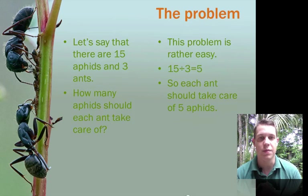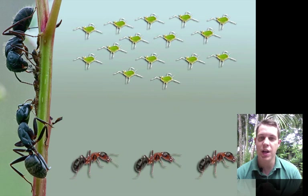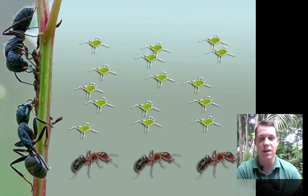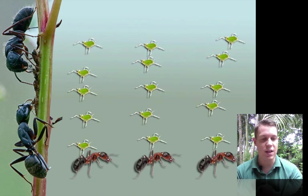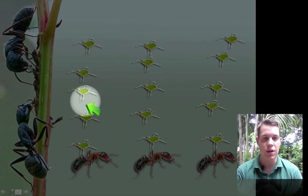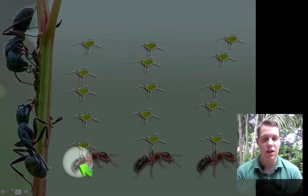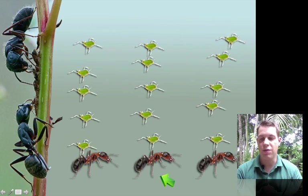Let's see what that actually looks like. So up here we have 15 aphids and at the bottom we have 3 ants. If we divide the aphids evenly, we can see that there are 1, 2, 3, 4, 5 aphids for each ant. Just like we figured out.